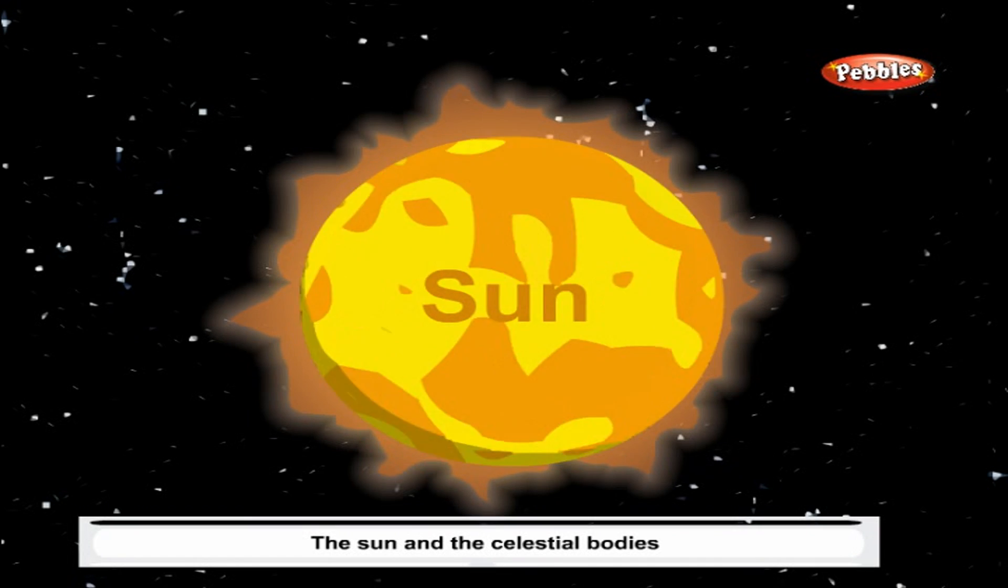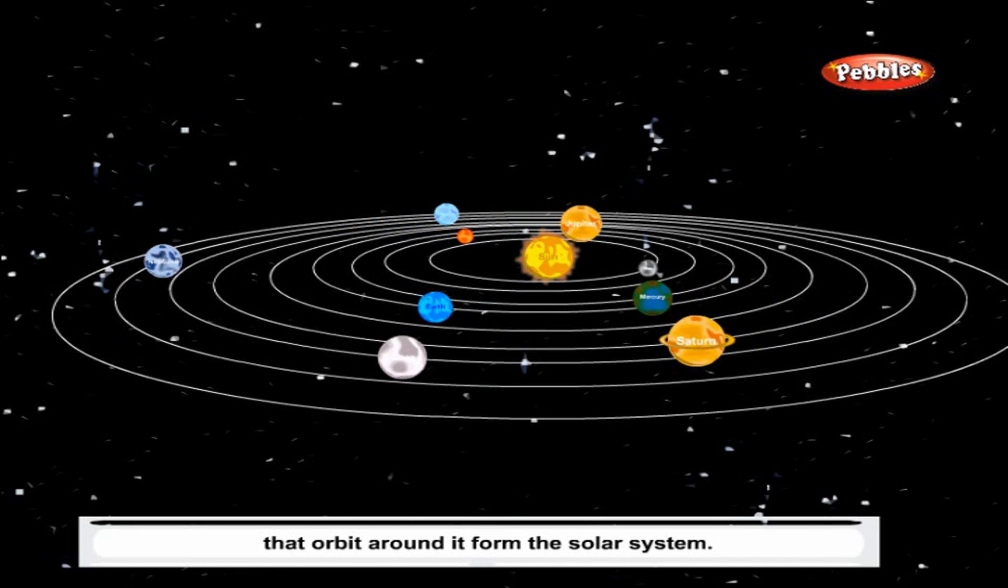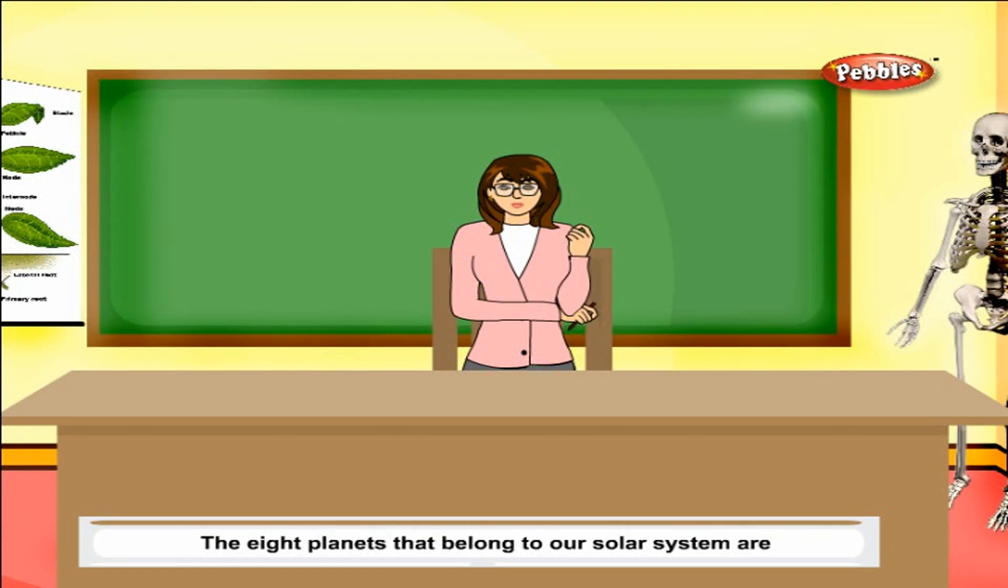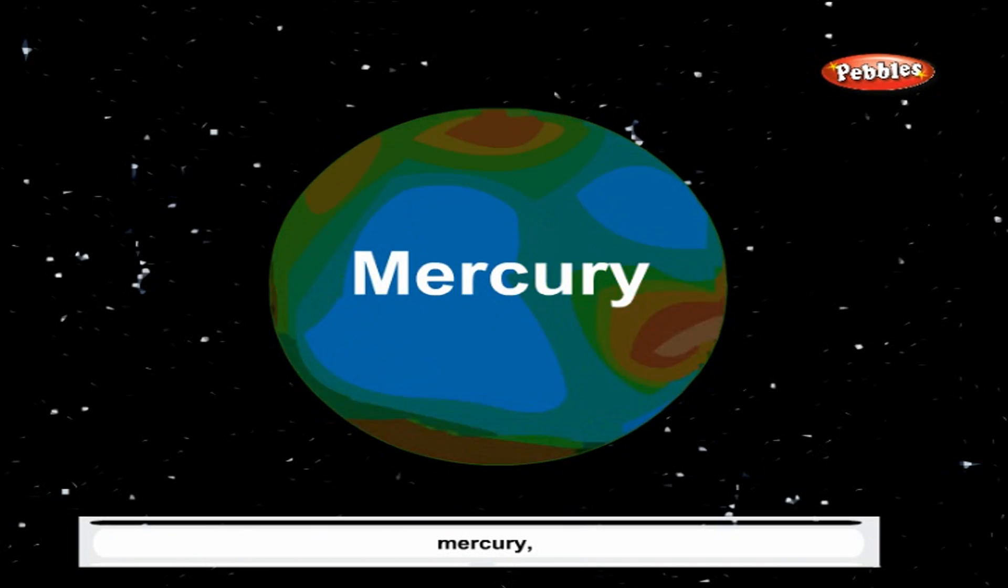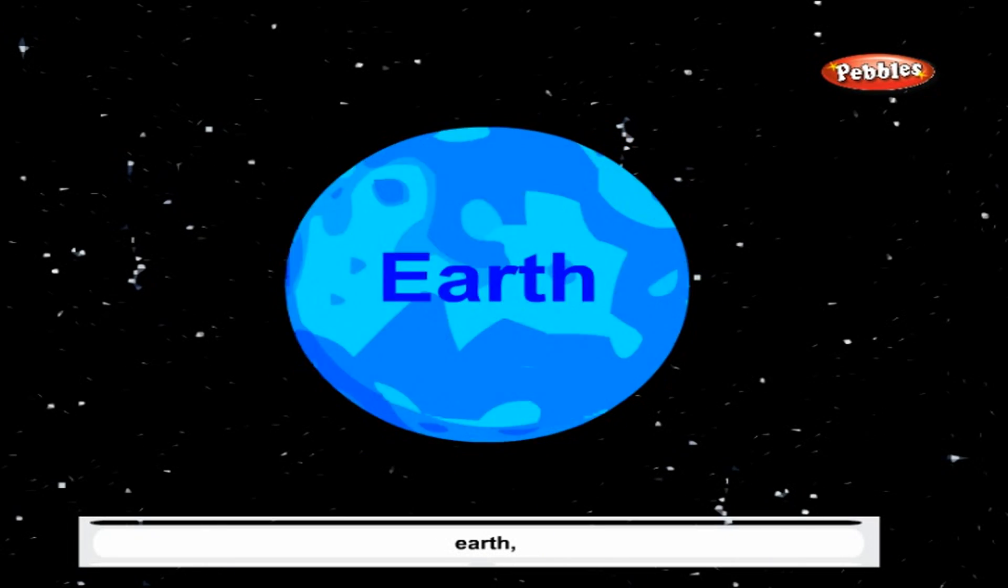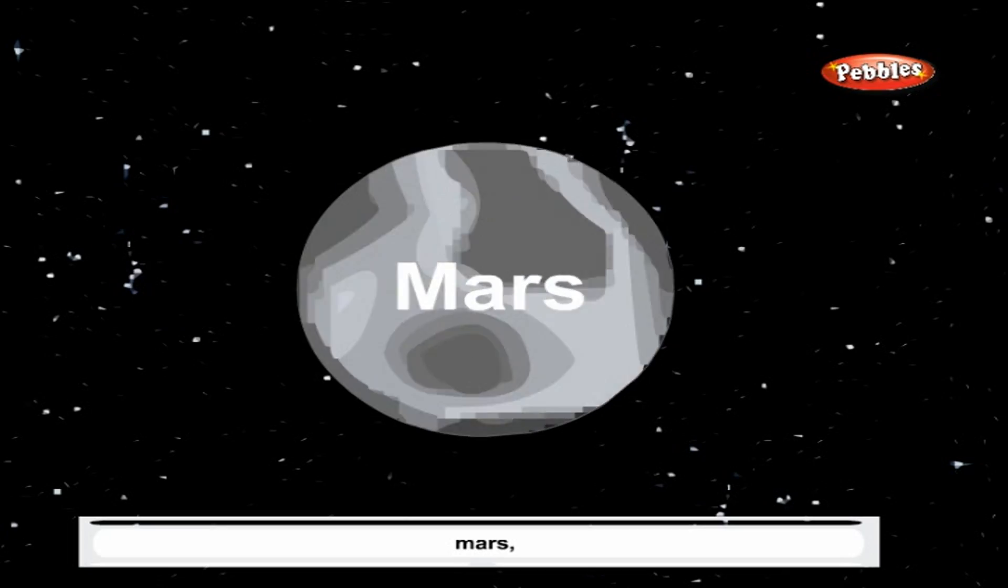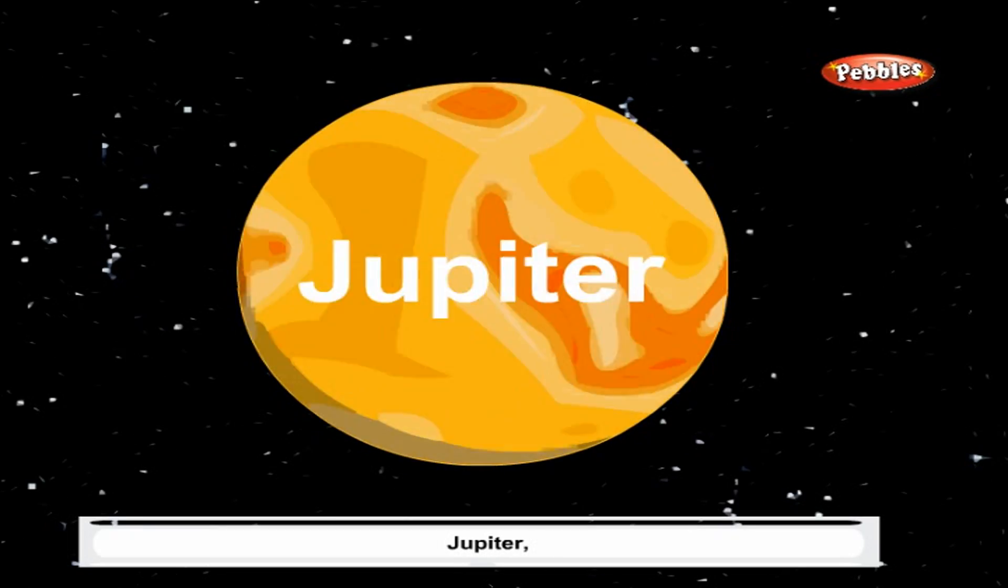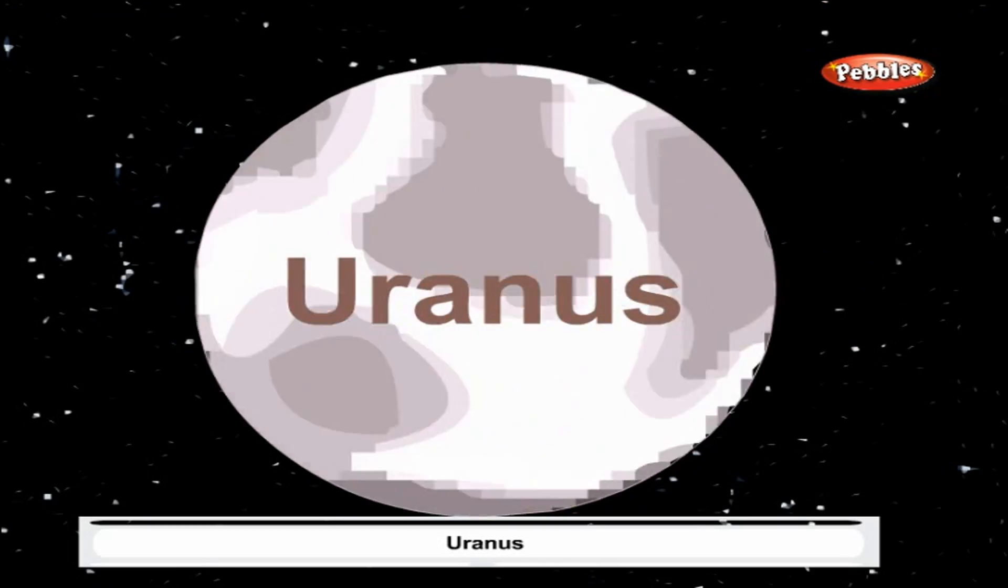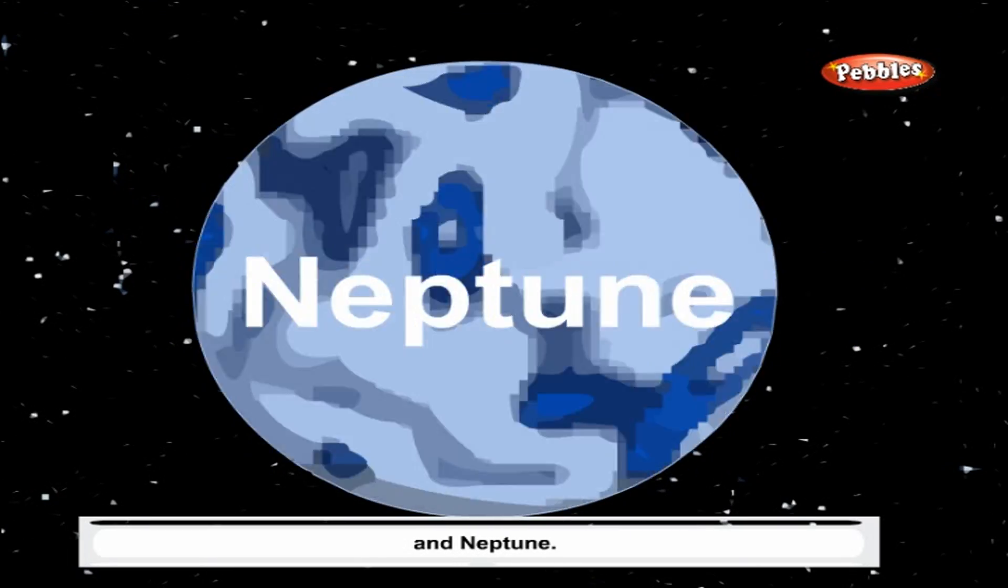Solar system: The sun and the celestial bodies that orbit around it form the solar system. The eight planets that belong to our solar system are Mercury, Venus, Earth, Mars, Jupiter, Saturn, Uranus and Neptune.